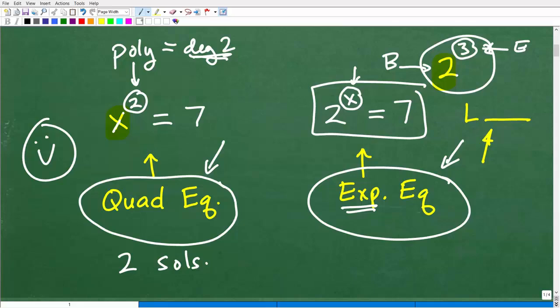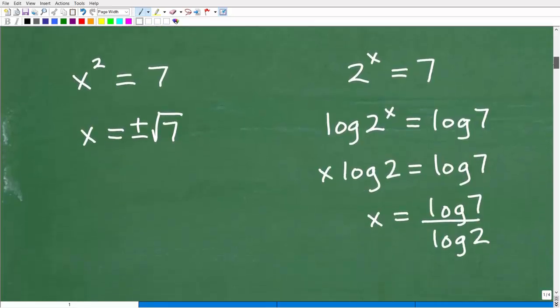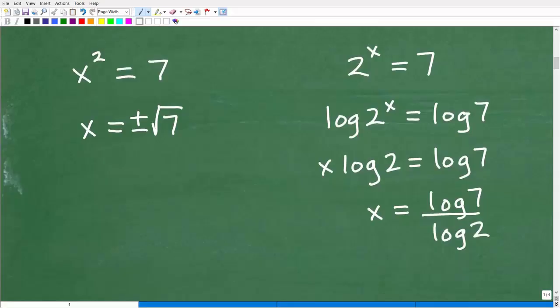All right, so now let's go ahead and get into actually solving these two equations. They're not that difficult, but again, completely different. So let's focus over here first. We'll get to this in a second. So we have x squared is equal to 7.